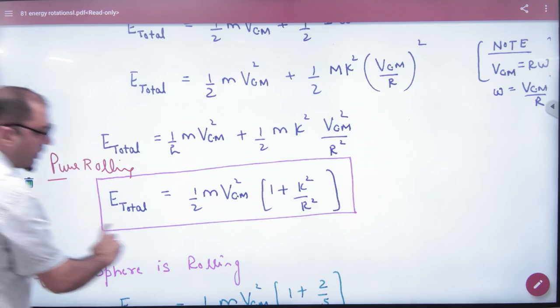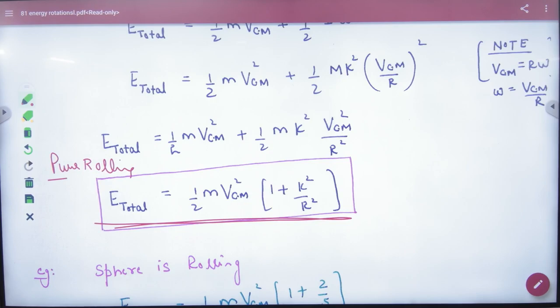Total energy equals—this is an important formula—note in case of rolling, total energy is half m v squared times 1 plus k squared by r squared.